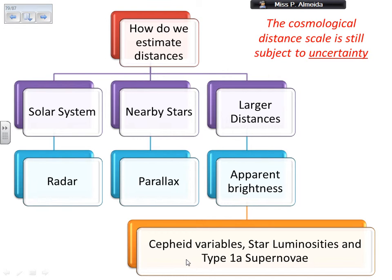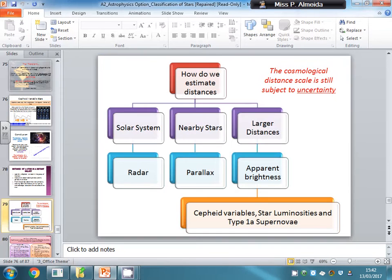I hope this helped. That's all for Cepheid variables, and that's really all for how you estimate distances. I have a video on radar, a video on parallax, a video on Type 1a supernovae, and a video on stars' spectra and the HR diagram. So you'll be able to see how you measure all these distances with all these methods. I hope it helps — see you in the next video. Bye!